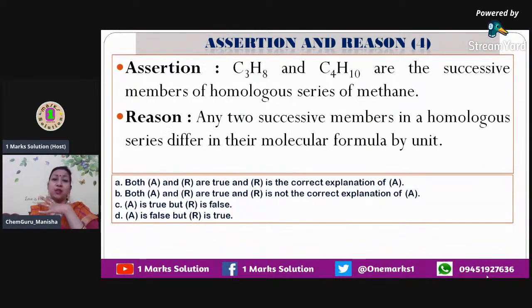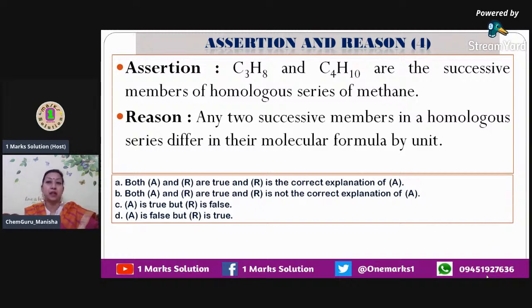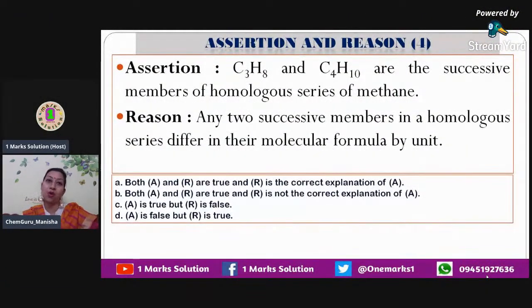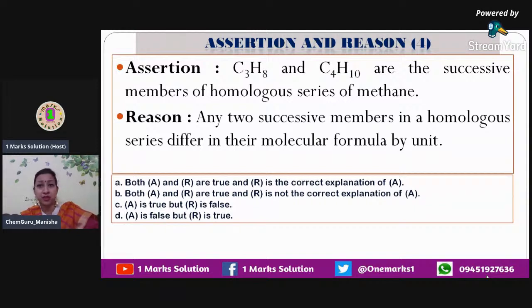Next statement: C3H8, which is propane, and C4H10, which is butane, are the successive members of the homologous series of methane. Methane is CH4 — it belongs to the alkanes family. The general formula for alkanes is CnH2n+2. Substituting N=3 gives C3H8, which is propane; N=4 gives C4H10, which is butane. So methane, ethane, propane, butane — my assertion is definitely correct.